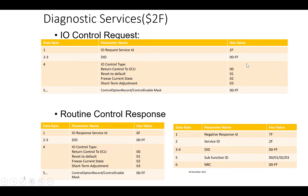IO Control is an add-on feature that we need to configure for a DID. For a specific DID, IO control needs to be enabled. So the request is: service ID 0x2F, followed by the configured DID, followed by the sub-function. There are four main sub-functions.